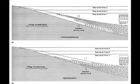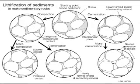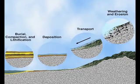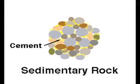Buried sediments, such as the limestones and sandstones at the Grand Canyon, go through a process called lithification. In this process, the sediments are pushed together and often have other minerals, such as lime or calcium, form between grains to glue the sediment together and form a hard unit.